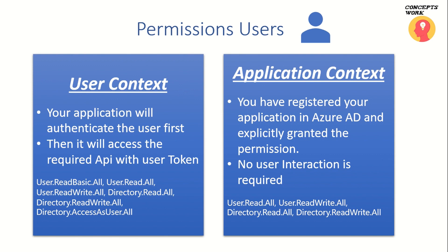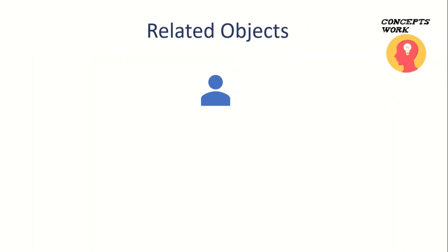In most of the application demos I'm going to showcase, I have granted Directory.Read.All permission, because if only User.Read.All has been given, you will not be able to query the related objects. For example, if my application is trying to access groups information, there is a different endpoint altogether, and User.Read.All will not work for that endpoint because every endpoint has its own permissions.